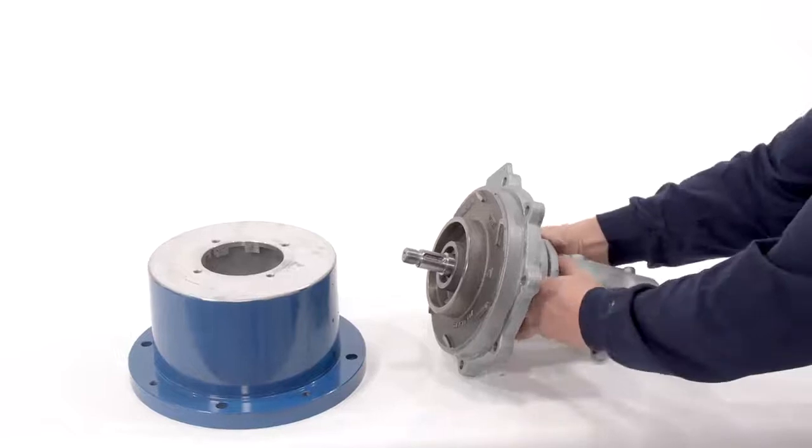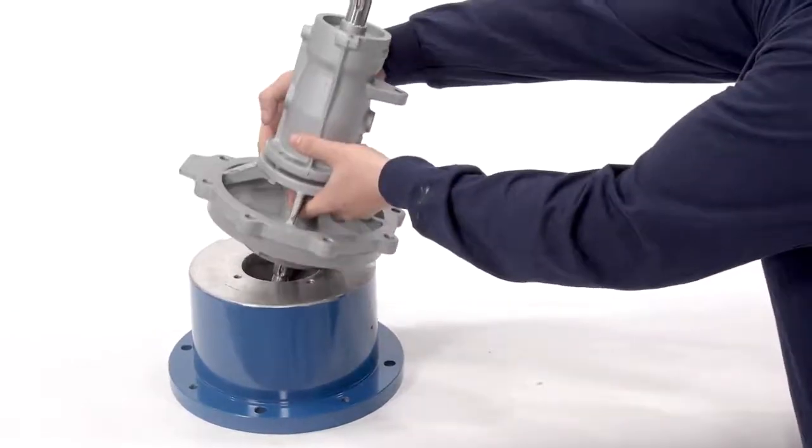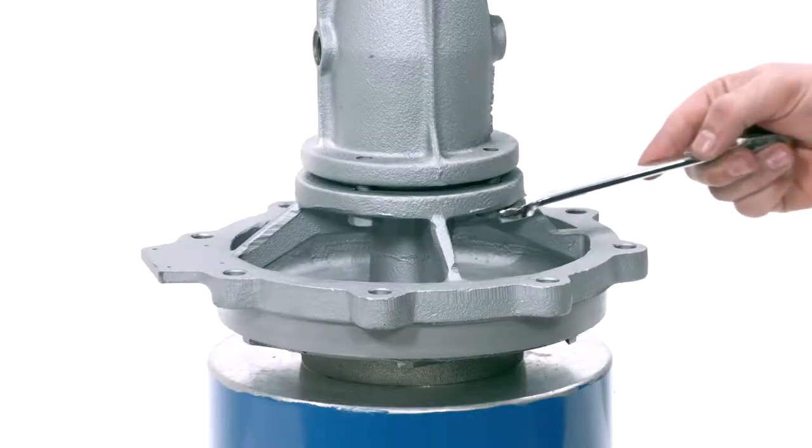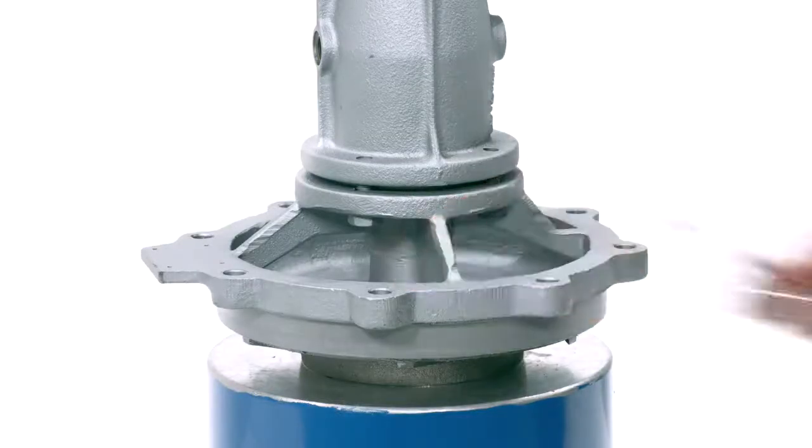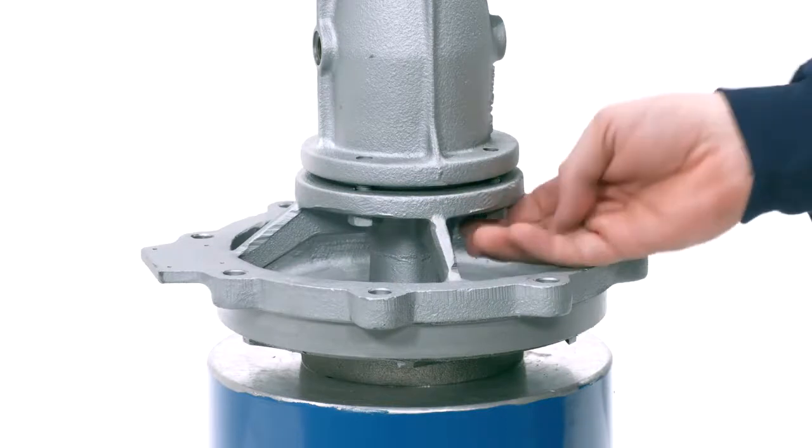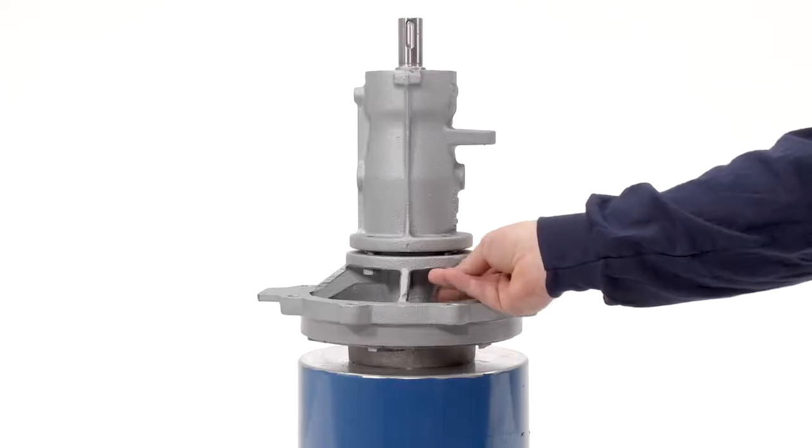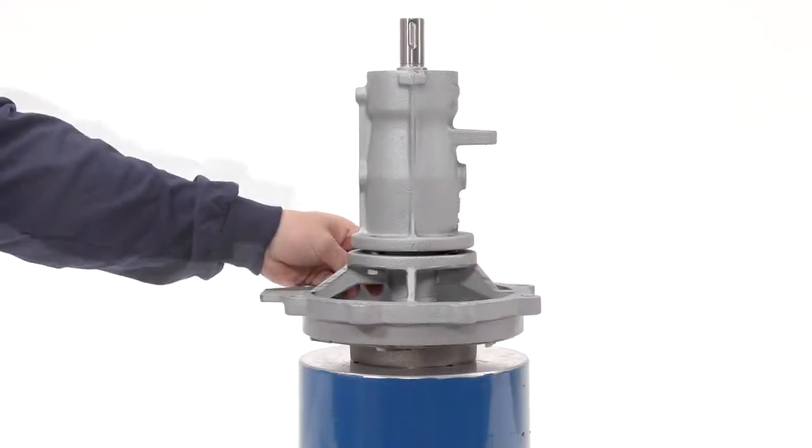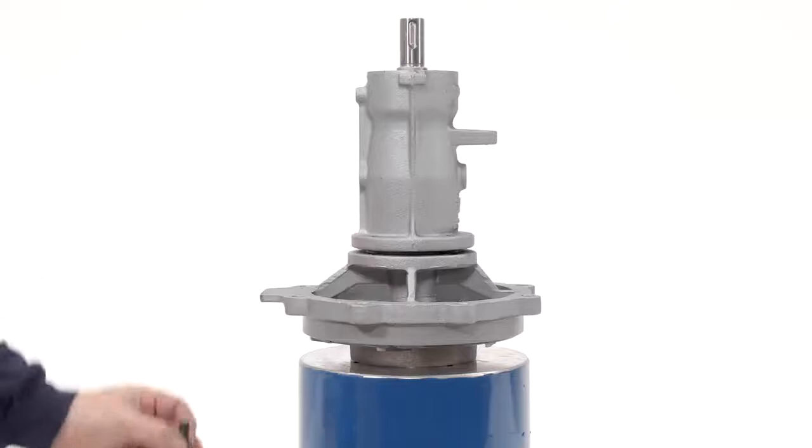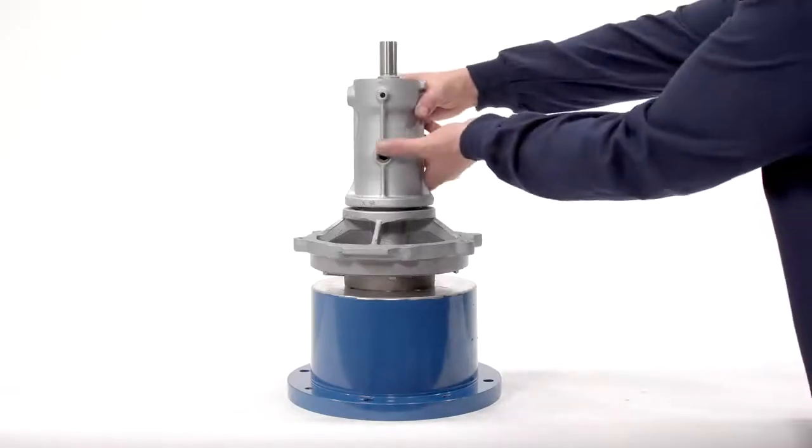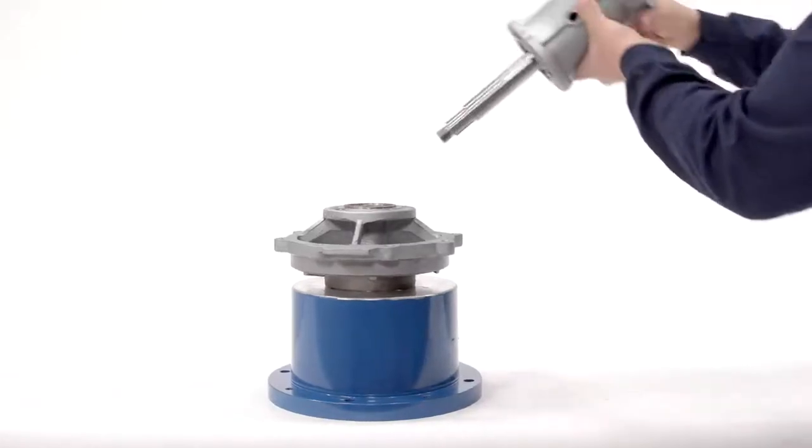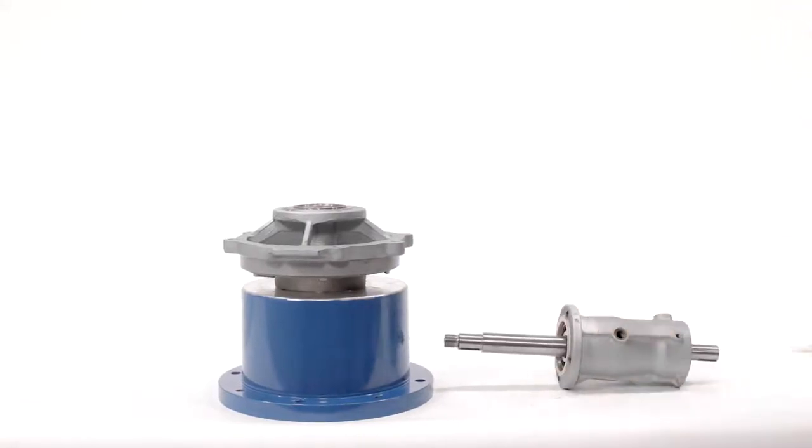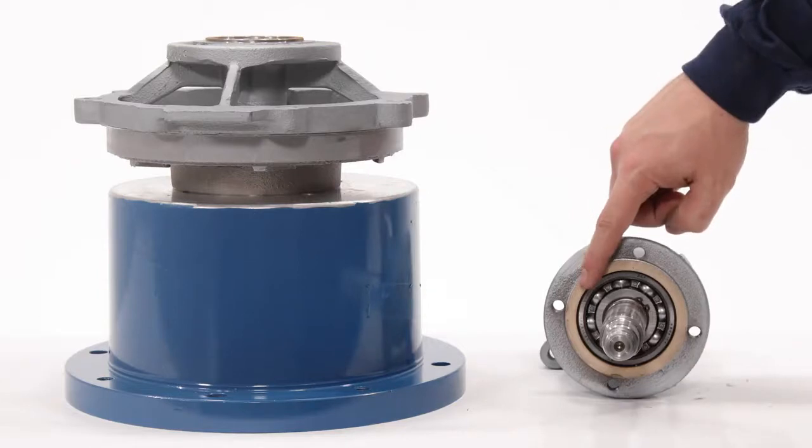Place the bearing housing on a cylindrical stand with the impeller side down. Remove the four casing cover bolts using a 17mm wrench. Lift the bearing housing and shaft up and off the casing cover. Inspect the gasket and replace if required.